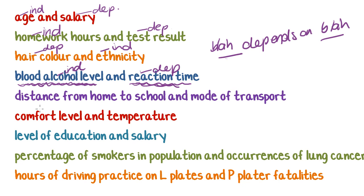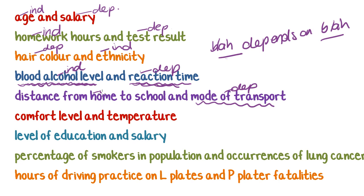Let's try another one: distance from home to school and mode of transport. Is your distance from home to school dependent upon your mode of transport, or does your mode of transport depend on how far you have to go? Mode of transport depends on distance — you might walk if you live really close, or catch the bus if you live quite far away. But the distance from home to school does not depend on your mode of transport. So mode of transport is the dependent variable and distance is the independent variable.